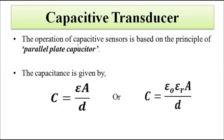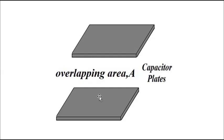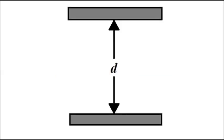The capacitance of the parallel plate capacitor is given by C = εA/d, written as C = ε₀εᵣA/d. Here, A is the overlapping area of the two capacitor plates — the portion of the area of the two plates which lies one above the other. D is the separation distance between the two plates.